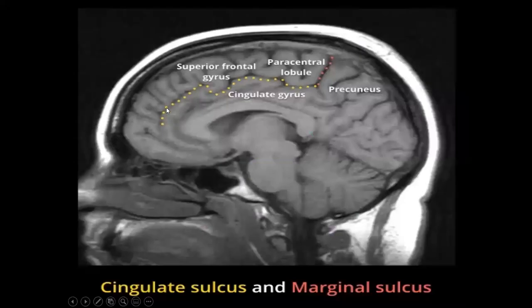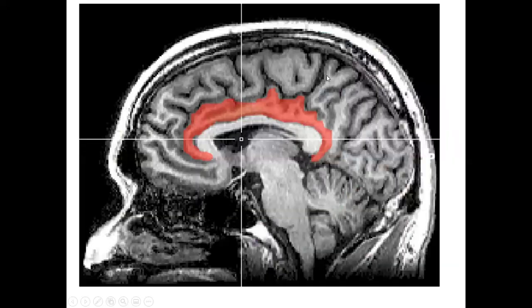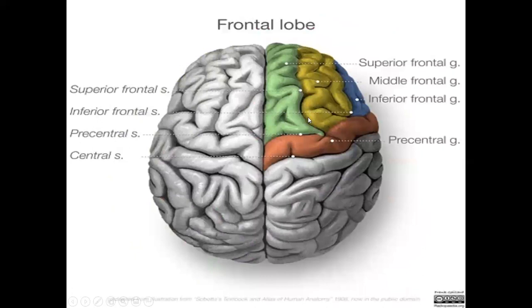You can see the cingulate gyrus, the cingulate sulcus, and the continuous marginal sulcus. This forms the limbic lobe.